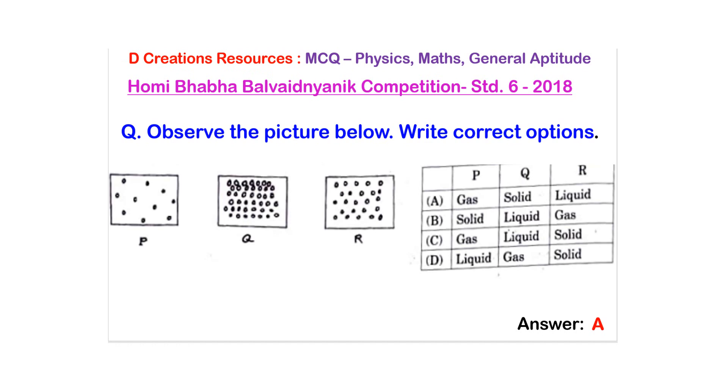This one is from that exam from the question paper of 2018 and it's meant for standard 6. Three pictures have been shown here in the question namely P, Q and R and you've been asked to observe the picture and write correct options.